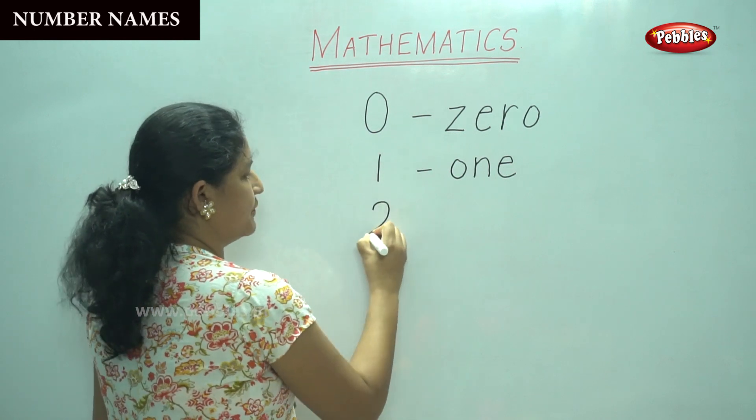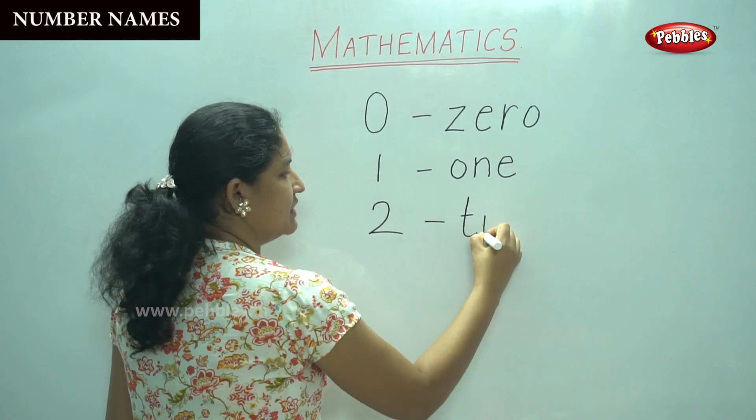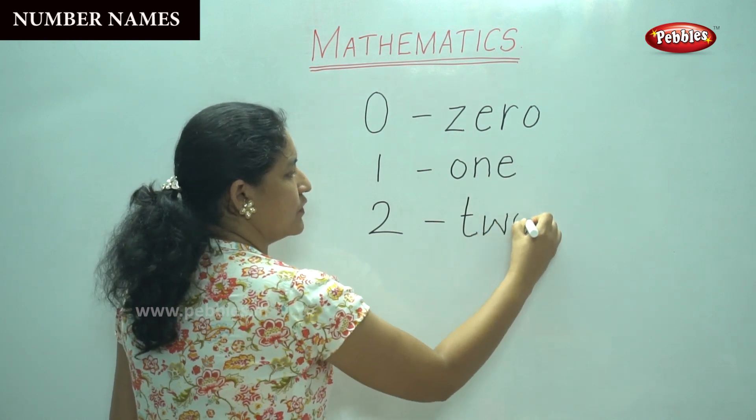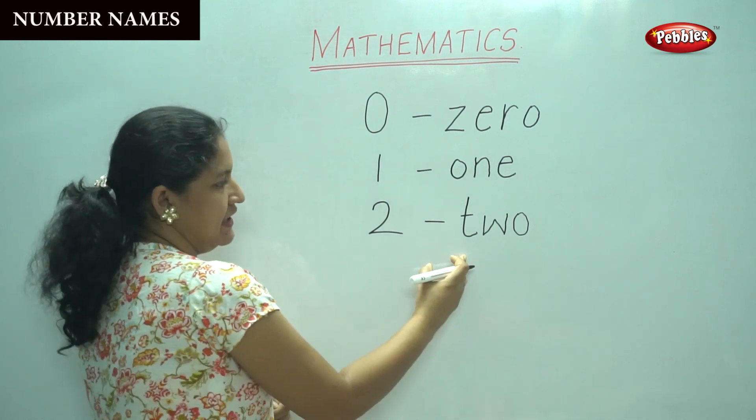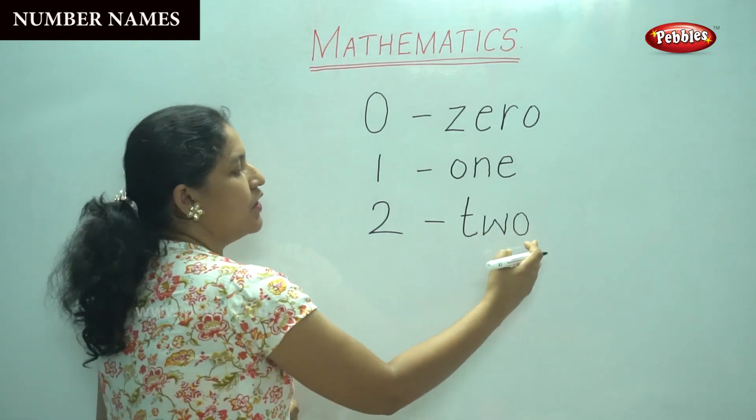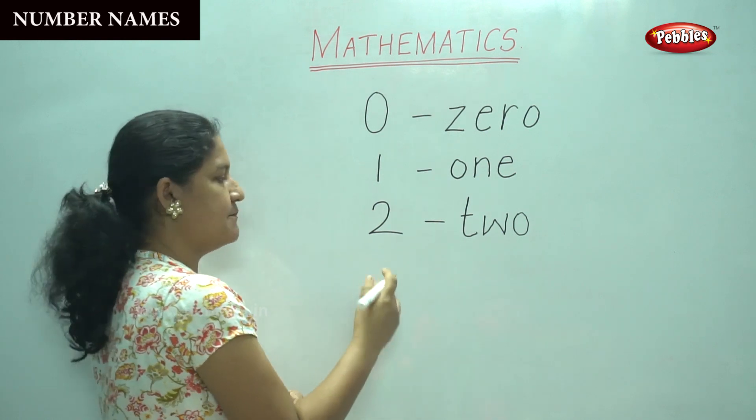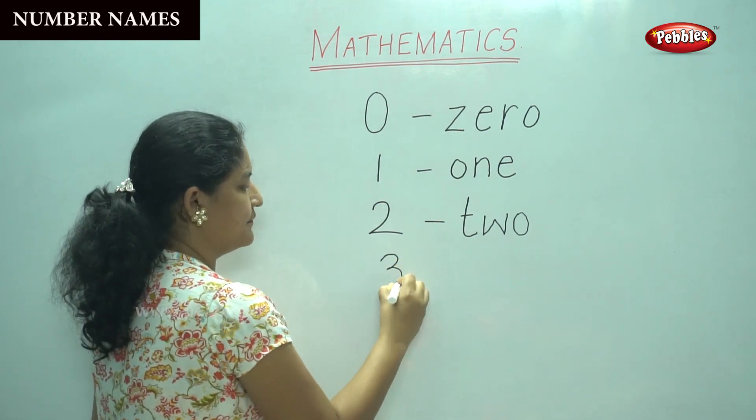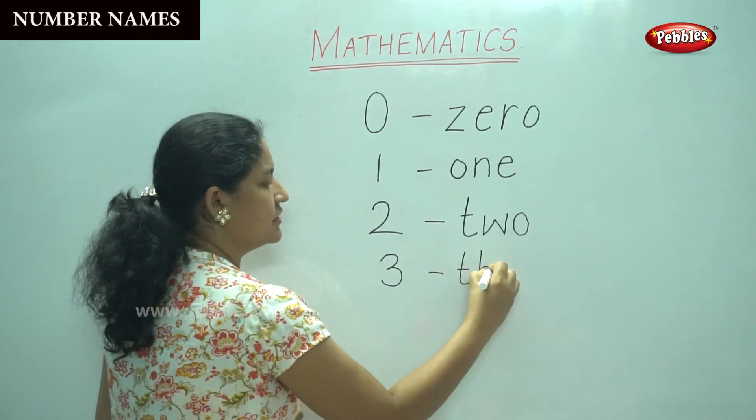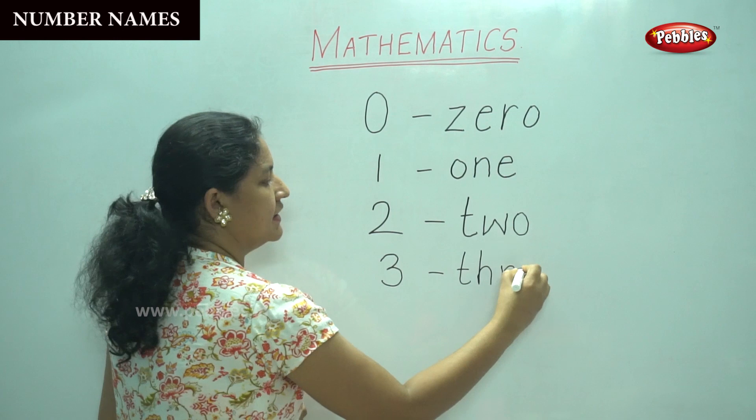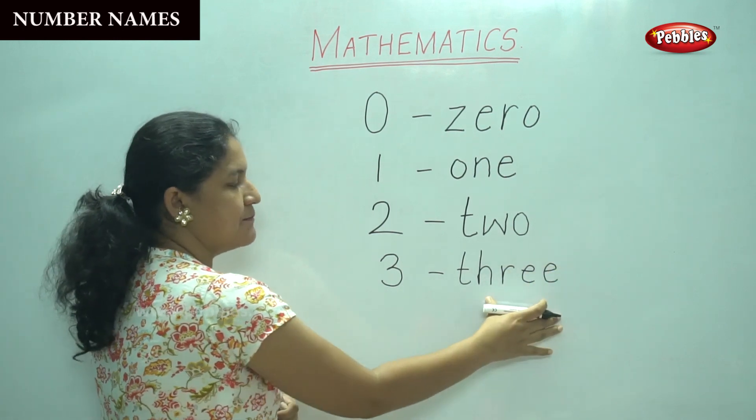So shall we move on to the next number children? Number 2: T-W-O. Can you spell it along with me? T-W-O. This is number 2. The next number, number 3: T-H-R-E-E. This is number 3.